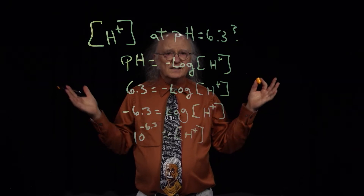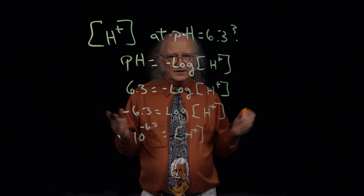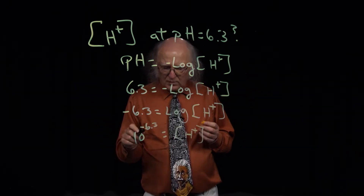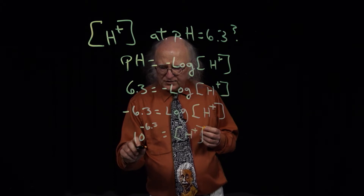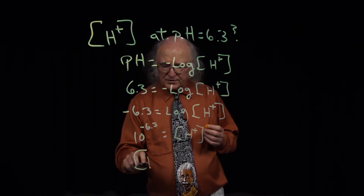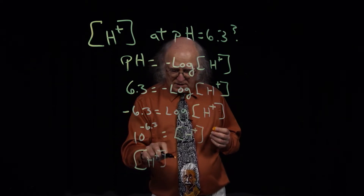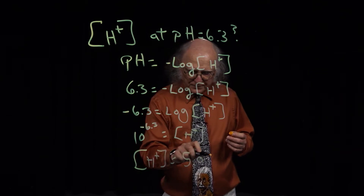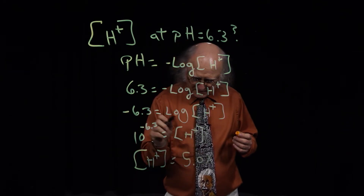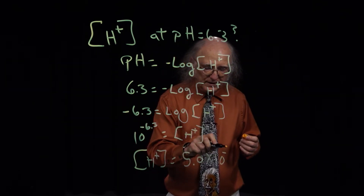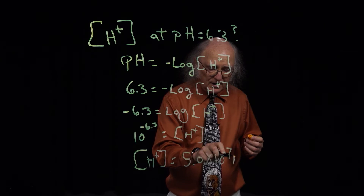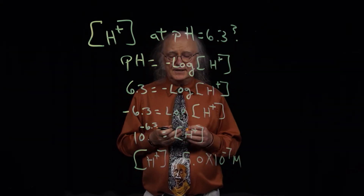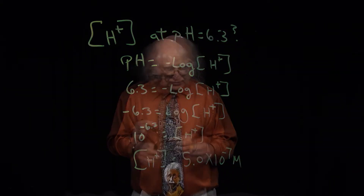For most things in the class, that's all you would need to do. If you punch that into a calculator, what you will see is that the hydrogen ion concentration is equal to 5.0 times 10 to the minus 7th molar. So that is the concentration of the hydrogen ion.